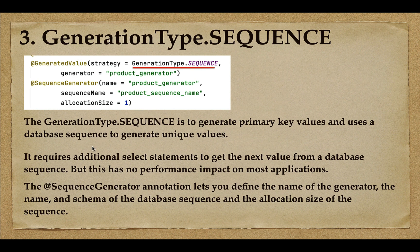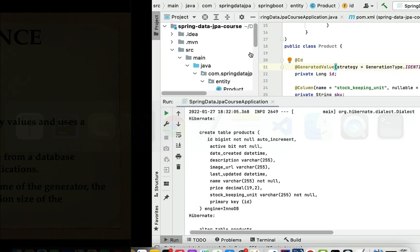The SEQUENCE strategy uses an additional SELECT statement to get the next value from the database sequence, but this has no performance impact on most applications. Most relational databases support sequences — for example PostgreSQL, Oracle, and MySQL. Let's go and see how to use SEQUENCE as the primary key generation strategy in our Product JPA entity in IntelliJ IDEA.